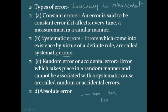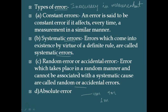The third type of error is called random or accidental error. These are errors which take place in a random manner and cannot be associated with a systematic cause. They arise due to irregular and unpredictable fluctuations in the factors affecting measurement. Random errors can be both positive and negative, and they can be estimated by taking many observations and calculating their mean. Systematic errors are only in one direction, but random errors can be in both directions.